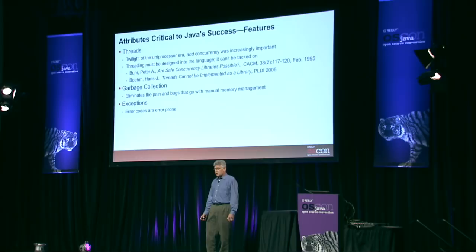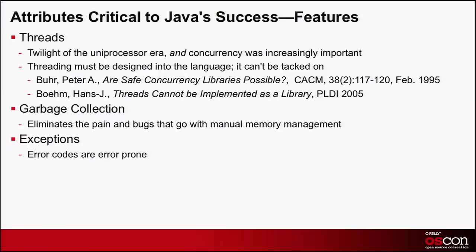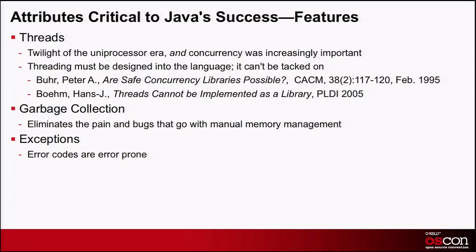Garbage collection eliminates all of the pain, heartache, and bugs associated with manual memory management. And then there are exceptions — error codes have been shown to be error-prone. If you look at C programs, people tend to ignore the error codes. When you're way down in the execution of a program and something bad happens, you have to do something — so you throw an exception. And those were the key features.